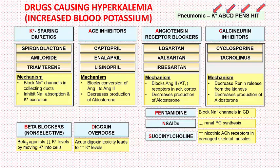Next we have succinylcholine. This drug increases nicotinic cholinergic receptors in damaged skeletal muscles, which may result in loss of potassium from skeletal muscles and lead to hyperkalemia.